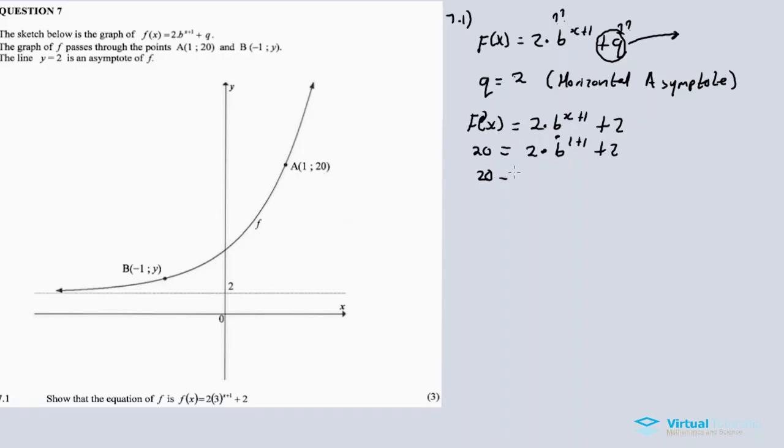20, let's transpose the 2. 20 minus 2 equals 2 times b squared, since 1 plus 1 is 2. So 20 minus 2 is 18 equals 2 times b squared. Divide by 2. 18 divided by 2 is 9 equals b squared. Taking the square root on both sides, plus or minus 3, the square root of 9 is 3, equals b. The value of b is positive 3.